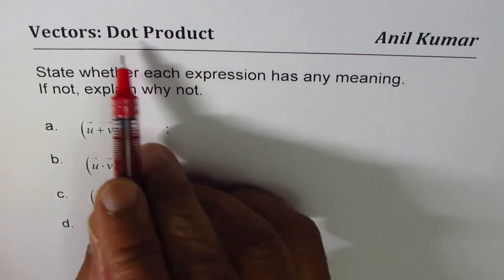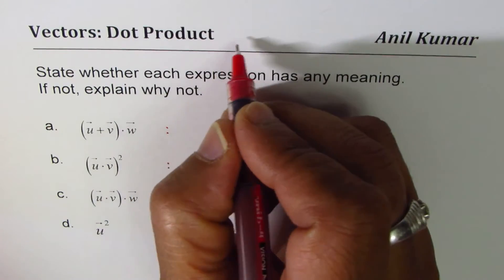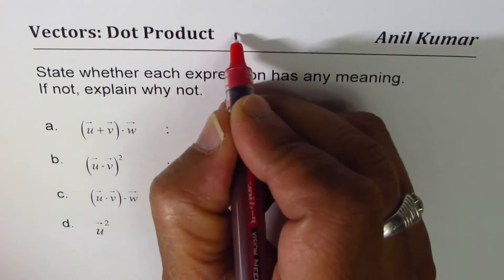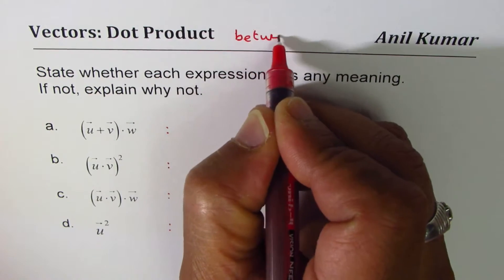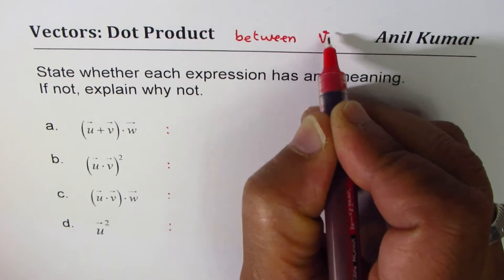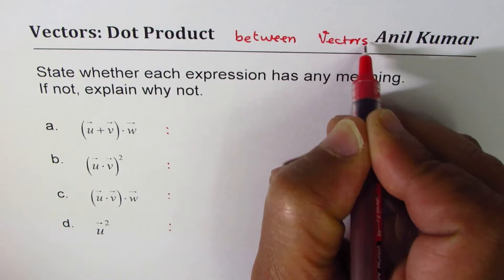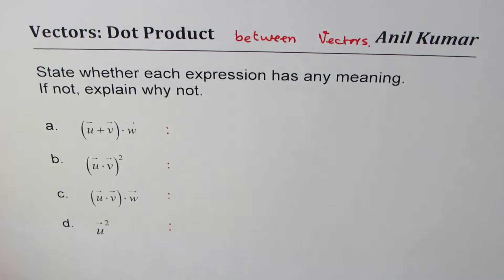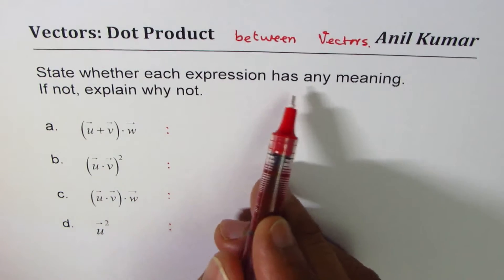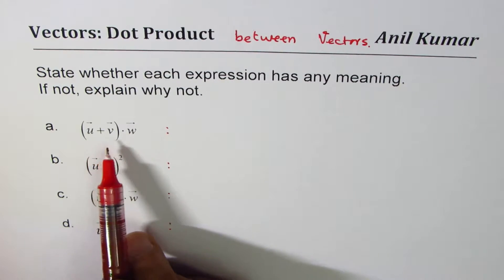And then we have square of vector u. Let's try to figure out whether these have meaning or not. Basically, we should understand that dot product is between two vectors. That is where the dot product is valid. You're not going to have dot product with scalar-vector combination. This is what we're trying to see here.